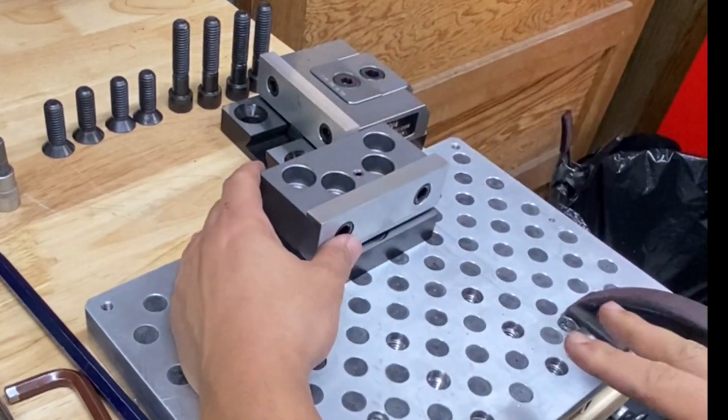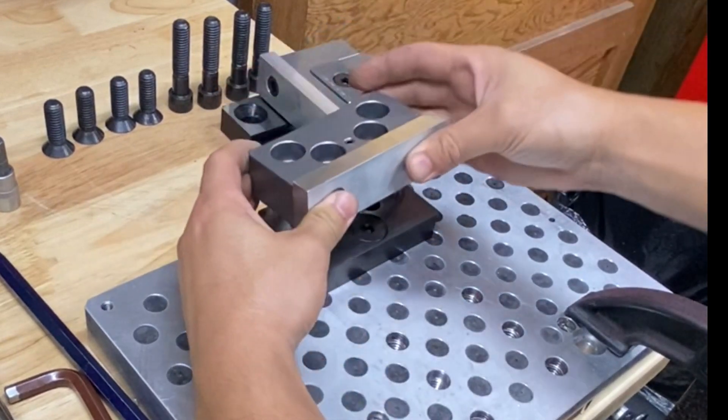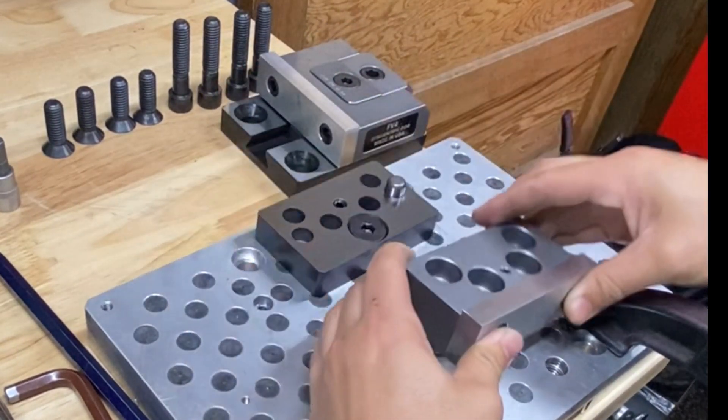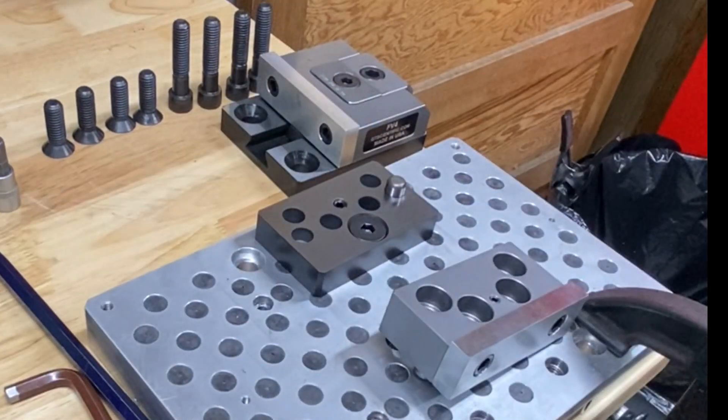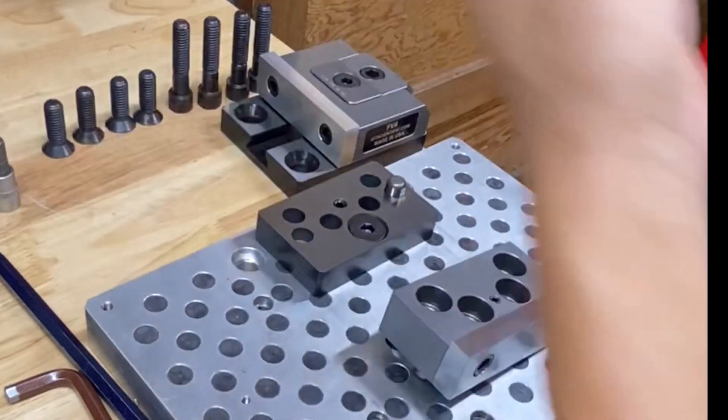The reason why this is here is that as you clamp something, this whole assembly is going to want to deflect back, and so I put this here to reduce the amount of deflection. It's less than a thousandth of an inch.